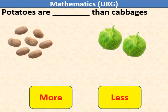Potatoes are blank than cabbages. We have seven potatoes and two cabbages. So, we can say potatoes are more than cabbages.